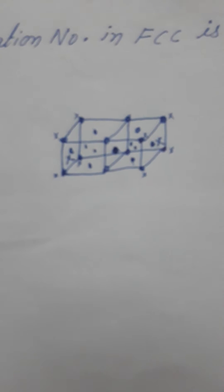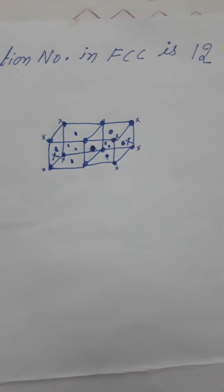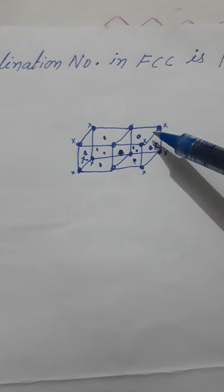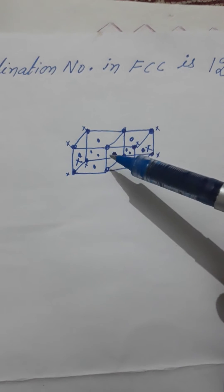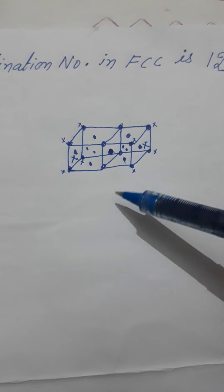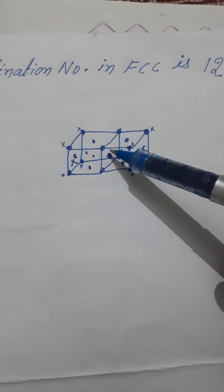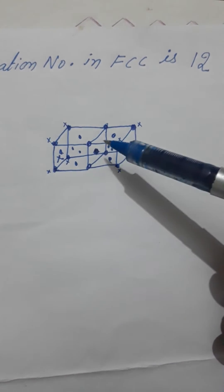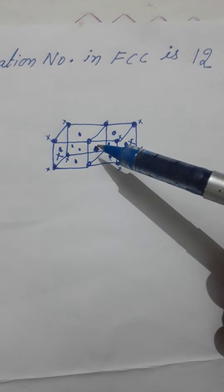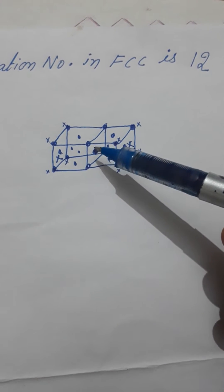Dear students, today by the help of this video we are going to calculate the coordination number in a face-centered unit cell. For this, look at this diagram — there are two face-centered unit cells present in contact with each other, one and two, and this middle face is common for both unit cells. We consider a particle on this common face, situated at the center of this face.